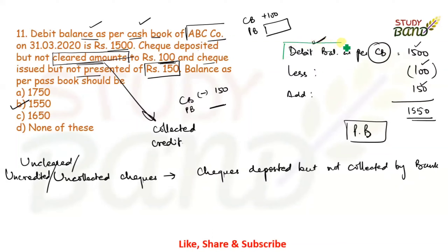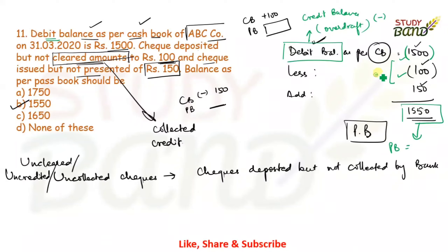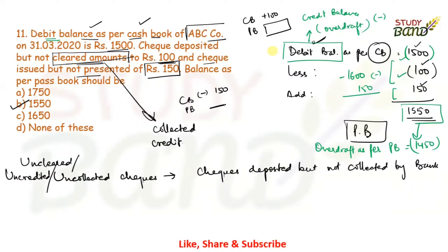If the starting point were a credit balance (overdraft) of 1,500 instead of debit, you treat it as negative: −1,500 minus 100 = −1,600, then plus 150 = −1,450. This would be an overdraft of rupees 1,450 as per pass book. The treatment for all adjustments stays the same — only the starting sign changes.